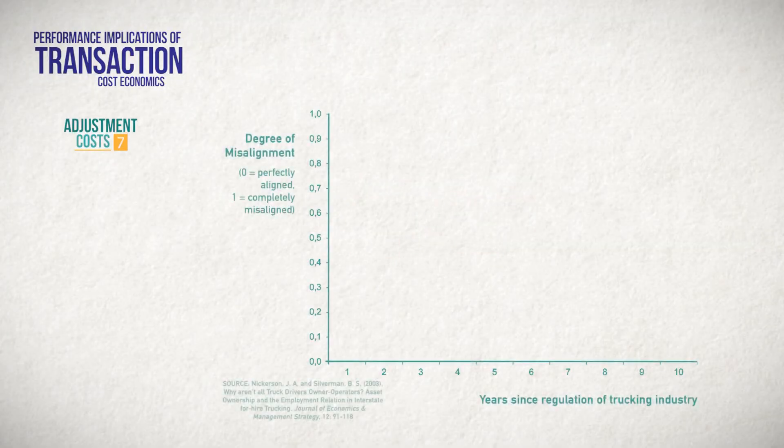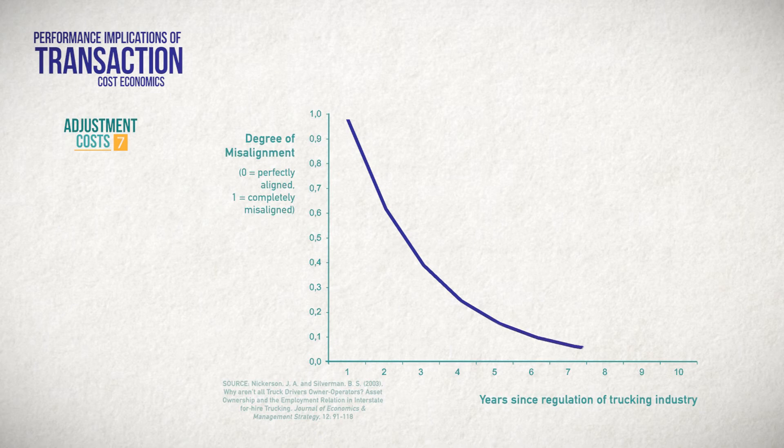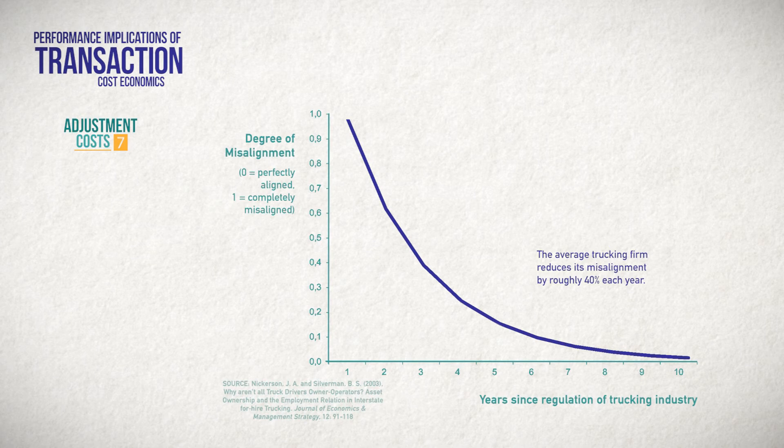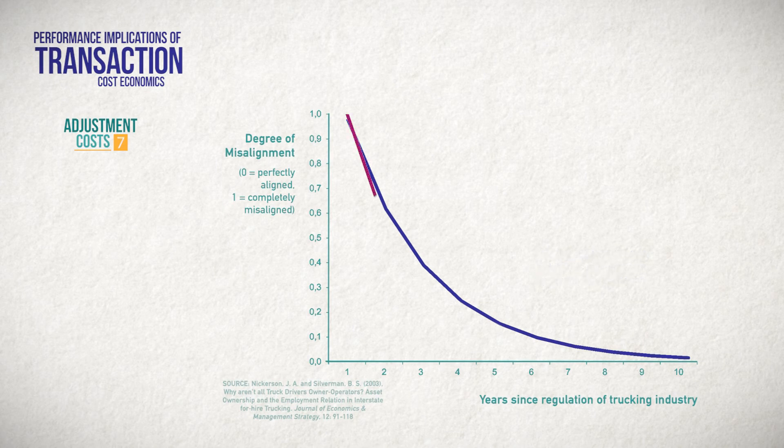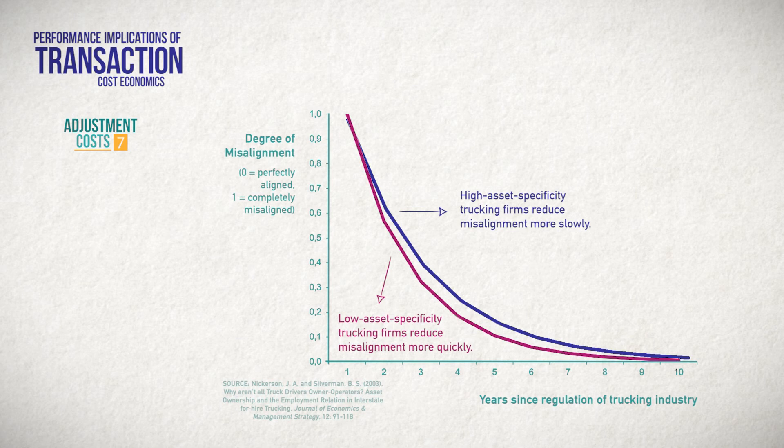Nickerson and Silverman, in the study mentioned earlier, explored this in the trucking industry. They find evidence that misaligned firms do indeed change governance so as to reduce misalignment, but that firms face adjustment costs when trying to change. In particular, the same features that TCE implicates as making firms dependent on others, asset specificity and contractual rigidities, can also make it difficult to unravel governance commitments, thus raising the adjustment costs for firms. So, economic actors do try to realign transactions, but they're constrained as to how fast they can accomplish this.